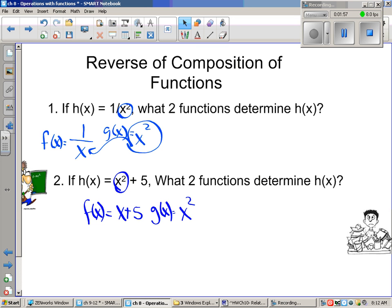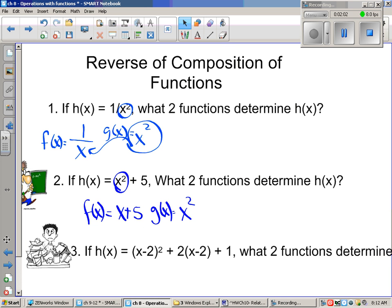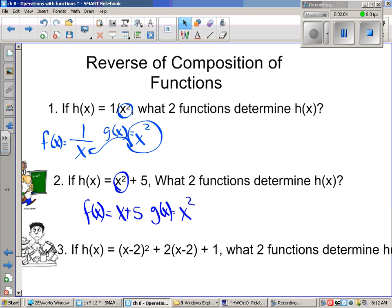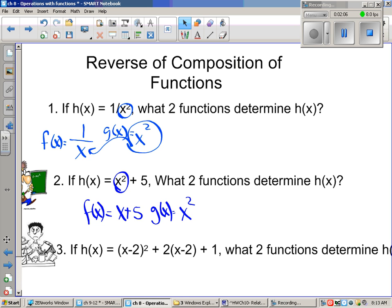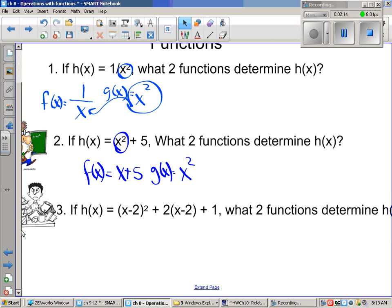Let's try another one. If h of x equals x minus 2 quantity squared plus 2 times x minus 2 plus 1, what two functions determine h of x? Again, what I want you to notice, okay, is in the spot where the x's are, where that x minus 2 is, what could I put there instead?